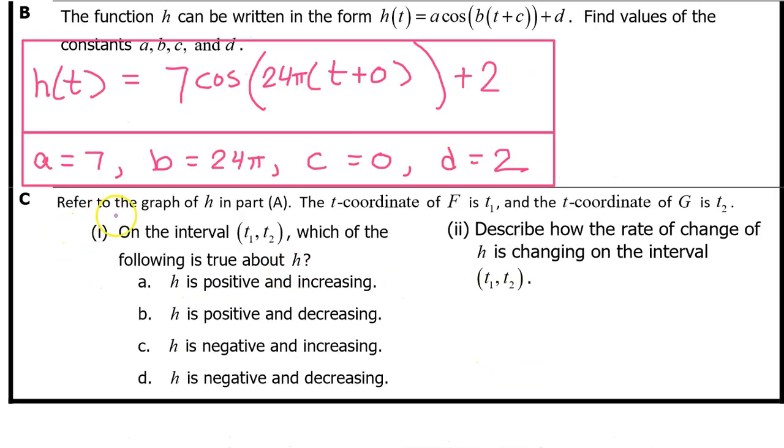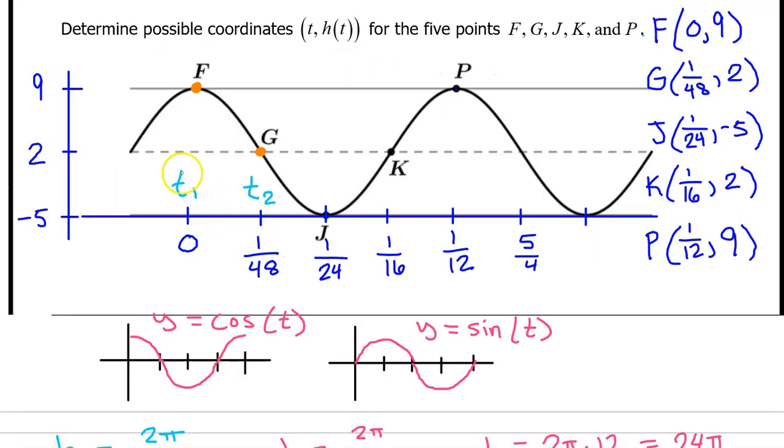Part c, refer to the graph of h in part a. The t coordinate of f is t1, and the t coordinate of g is t2. In other words, t1 is here, and t2 is here. So this problem is about the interval between f and g.